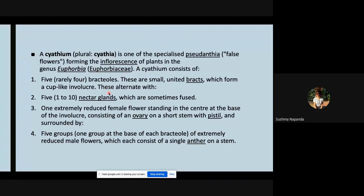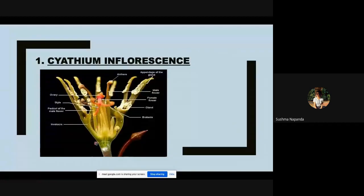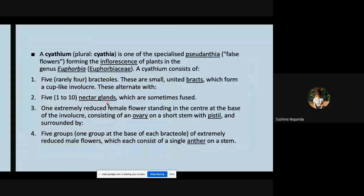A cyathium consists of five bracts or bracteoles which form a cup-like involucre, that is the layers as you can see here. These bracts form the involucre and it has nectar glands and one reduced female flower, and around it we have five groups of extremely reduced male flowers.